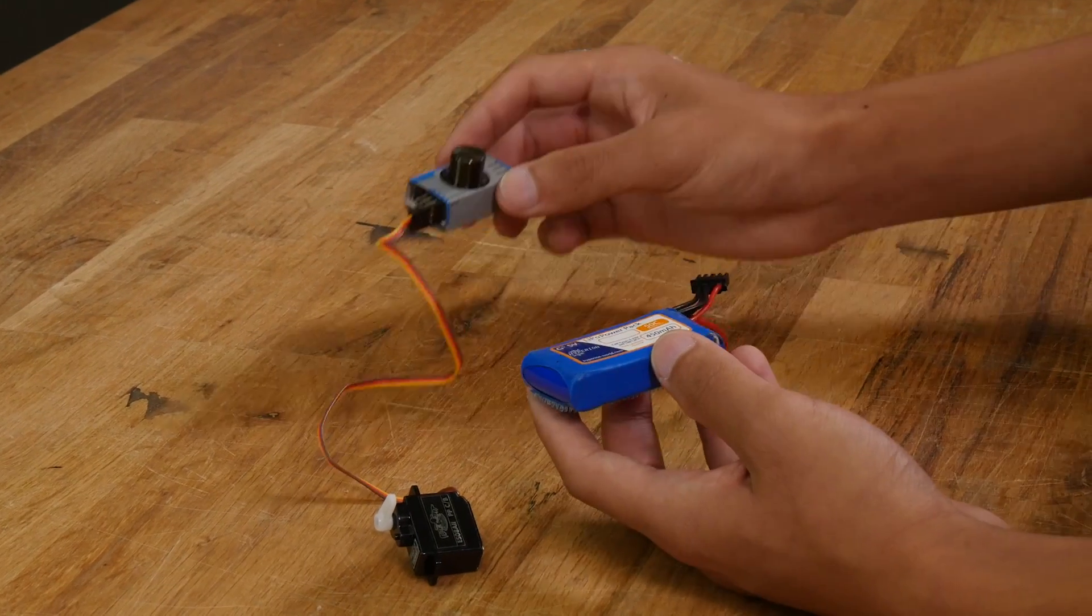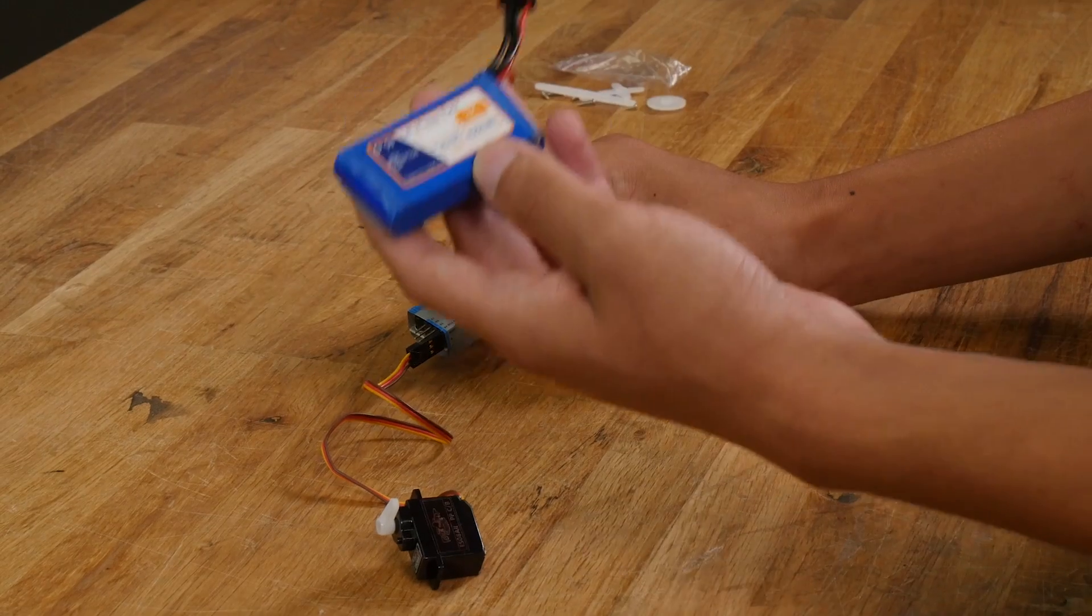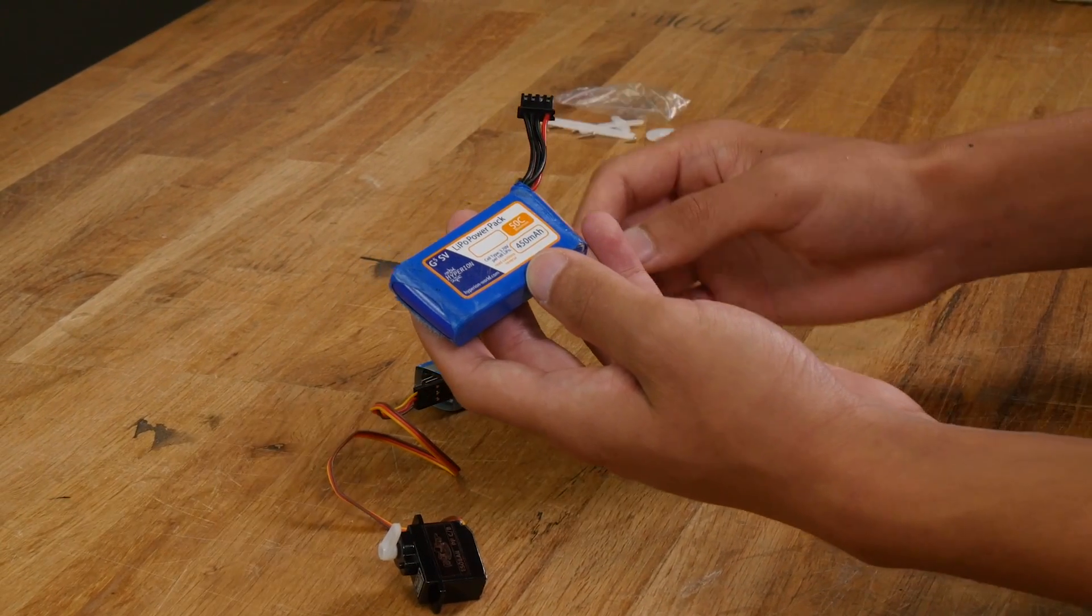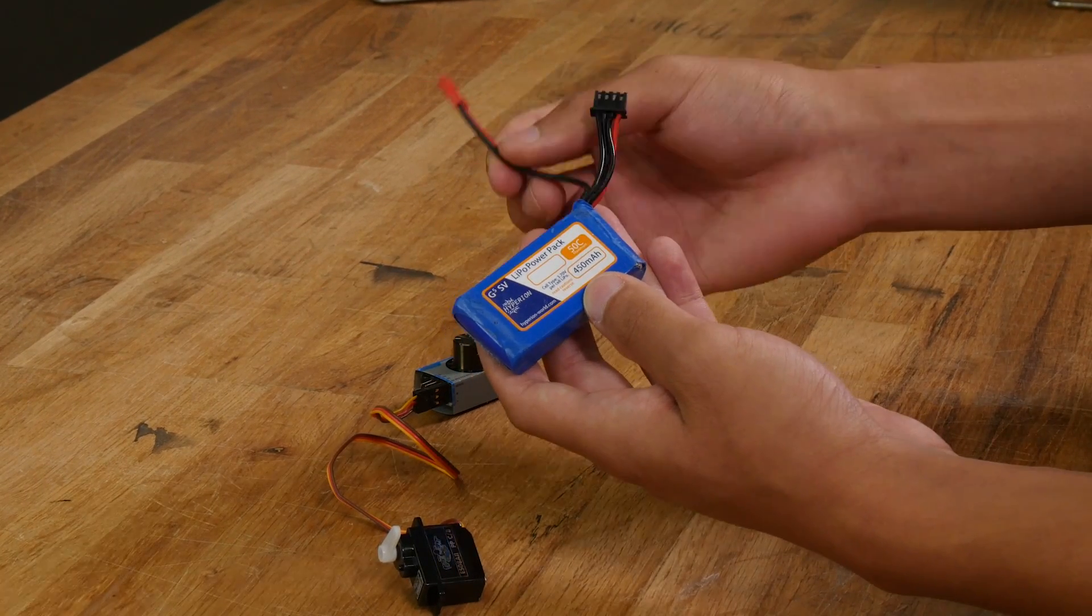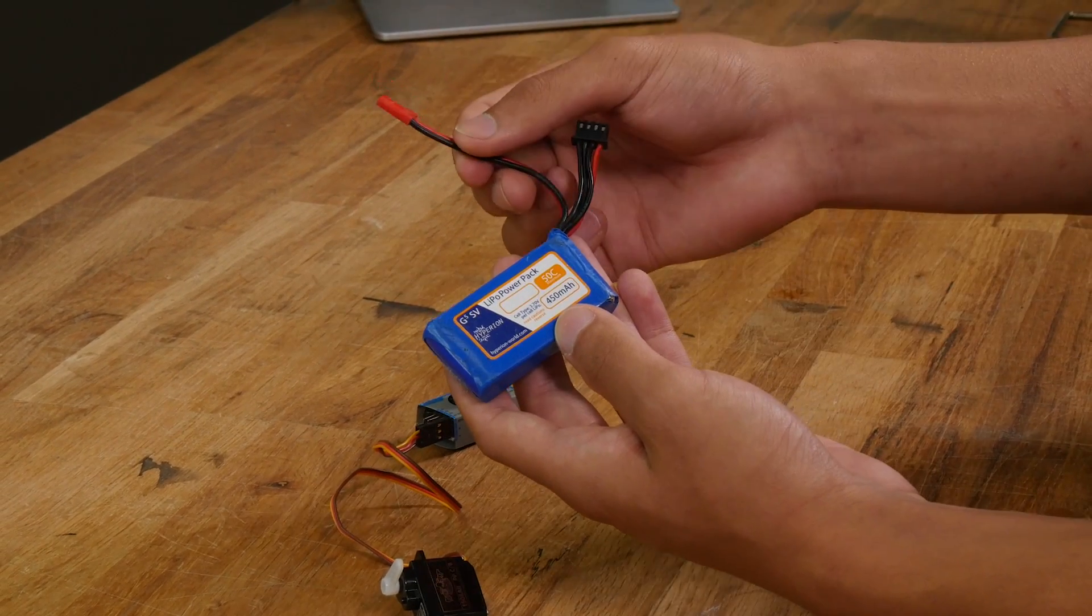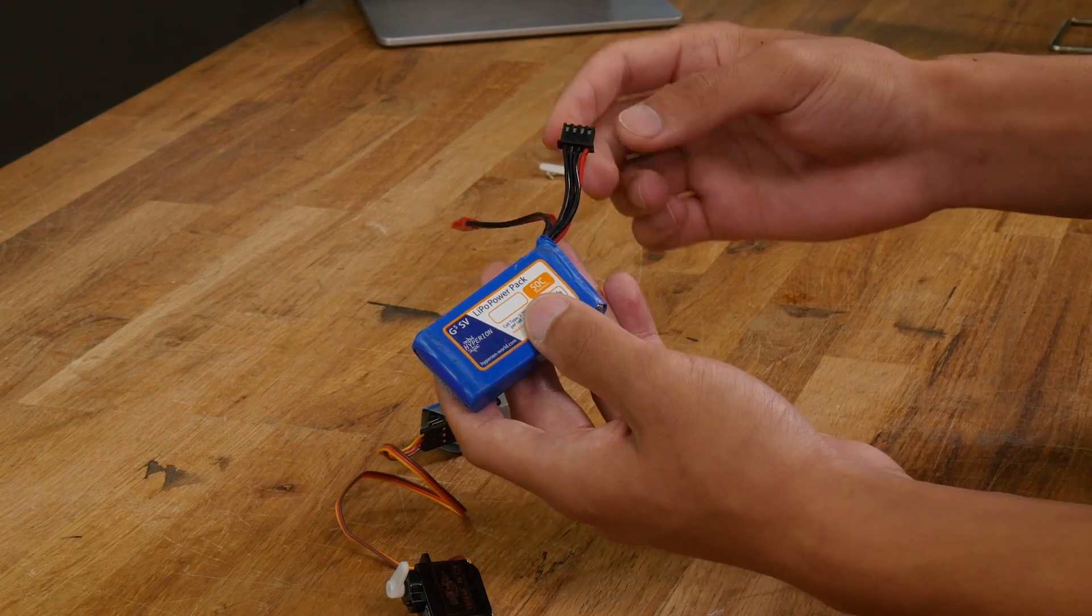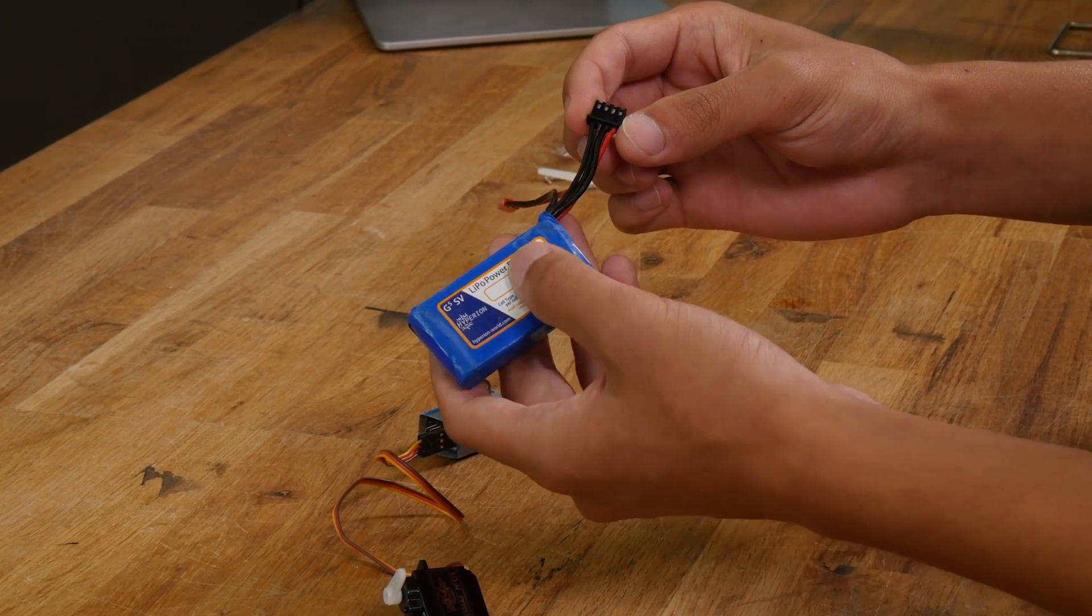Now, a simple way to power your servo tester is to grab a battery. It can be any size battery with any cell count. The important thing is to plug it in with the balance lead and not the main battery connector. The main connector delivers all the voltage in the battery, while the balance connector delivers voltage from each individual cell.